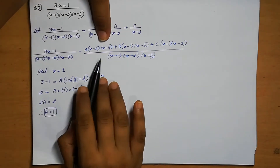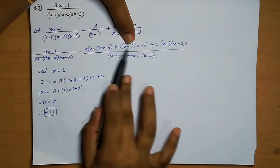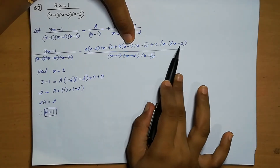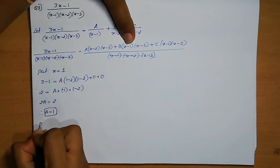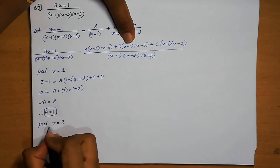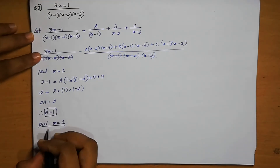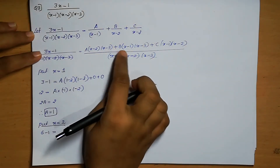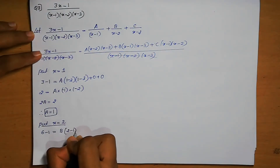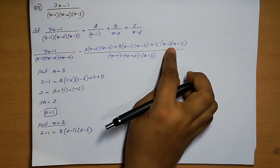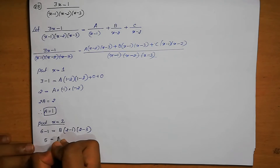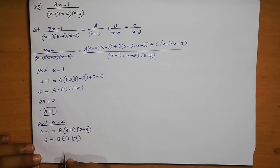Next, find B. Put x equals 2: 3(2) minus 1 equals 5. The A-term and C-term become 0. So, 5 equals B(2 minus 1)(2 minus 3) equals B(1)(minus 1) equals minus B. Therefore, B equals minus 5.